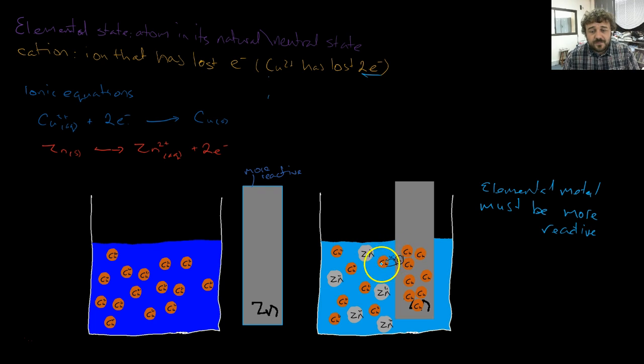So copper ion comes along, it's a cation, it's missing two electrons. It reacts with the zinc elemental metal by taking two electrons from it. They go over this way. It takes two electrons from it and the copper will deposit itself as a solid element on the zinc strip.